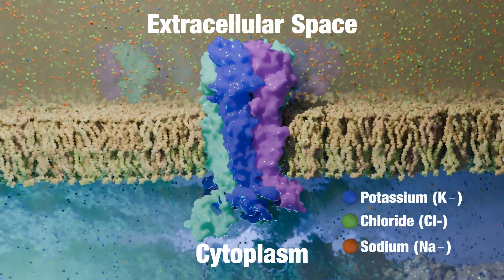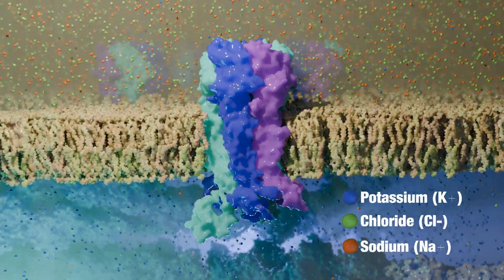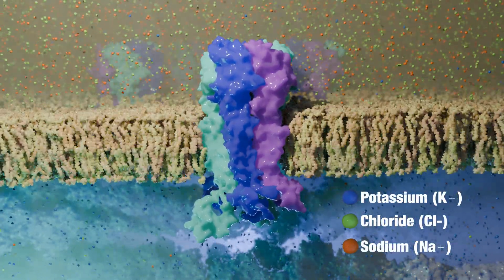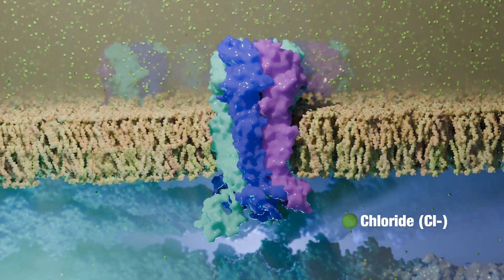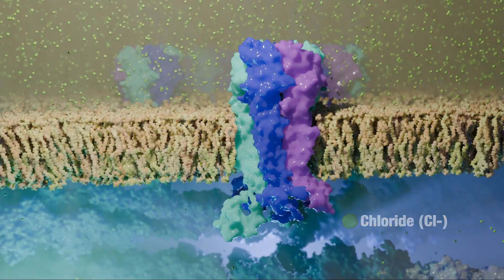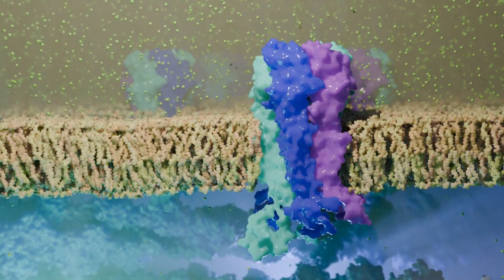You can see the ion concentrations here. The concentration of each ion varies depending on the location. The chloride ions are relevant for the GABA-A receptor. Their concentration is higher in the extracellular space.